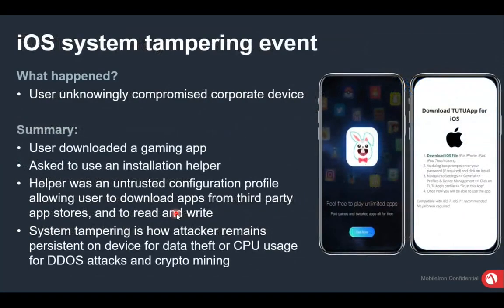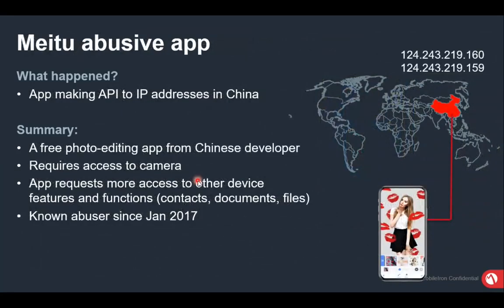Another example: an app called TuTu — a gaming app not available in the official app store — when users tried to download or sideload it, the app tried to read and write data from other applications installed on the same device. Similarly, a malicious abusive app originating from China in 2017 tried to read contacts, documents, and files and sent them to hackers' servers.